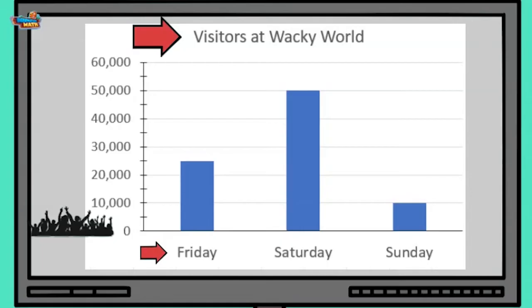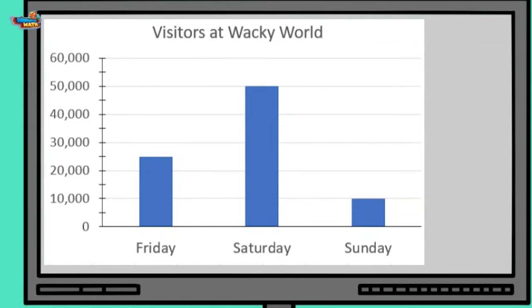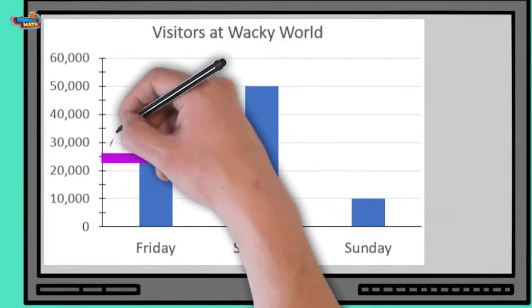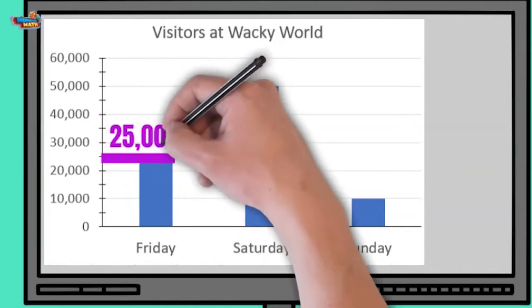Neato! How many total people went to the park on Friday, Saturday, and Sunday? It felt like a million! Well, let's do some interpreting and figure it out. We look to see where each bar lines up with the vertical axis. On Friday, the bar ends at 25,000.